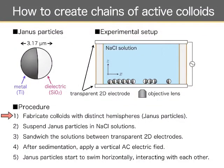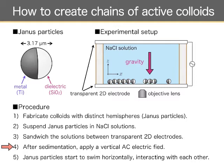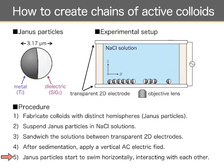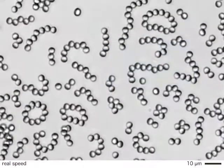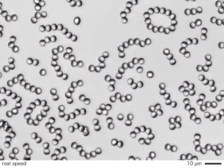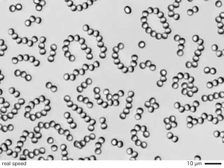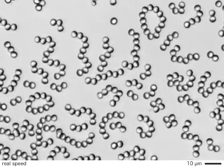First, we fabricated Janus particles, which are colloidal particles with distinct hemispheres. We suspended the Janus particles in NaCl solutions and sandwiched them between two transparent two-dimensional electrodes. Due to gravity, the particles sedimented very close to the bottom electrodes. Then we applied an AC electric field in the vertical direction, and the particles start to swim in the horizontal plane, interacting with each other. By tuning the frequency and amplitude of the applied electric field and the ion concentration of the solution, the particles exhibit dynamical chain cross-structures.